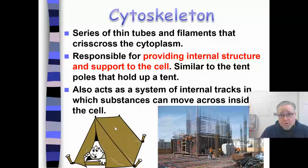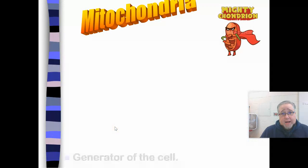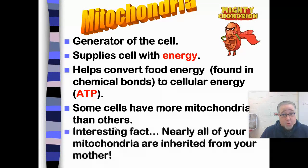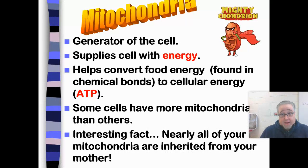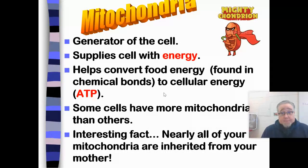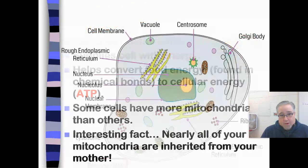The cytoskeleton is what gives structure to the cell. The mitochondria is a really important organelle — this is what supplies energy to your cells. Without mitochondria, your cells won't have any energy. They convert food energy — that's why we need to eat food — into cellular energy, which is known as ATP. That's what mitochondria are making.